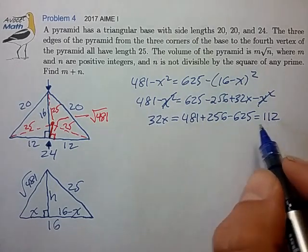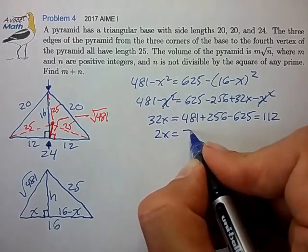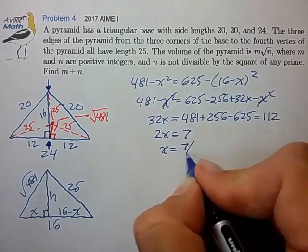That's 112. We can divide by 2s to get this down to 16x equals 7. X is equal to 7 halves.